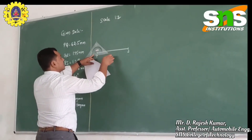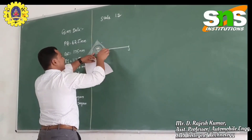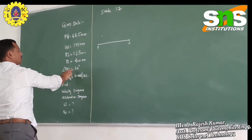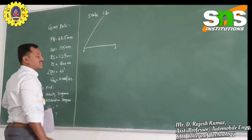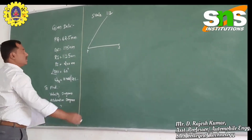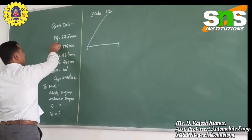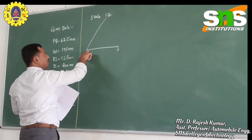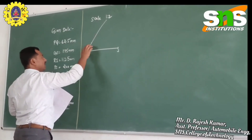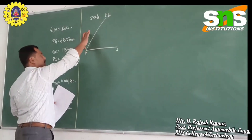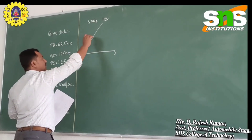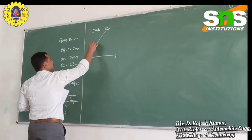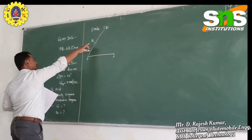Now I am taking 60 degrees and drawing a line at 60 degrees, because angle QPS equals 60 degrees. What is the length of link PQ? It is 62.5 mm; scaled, it is 31.25 mm, which is 3.12 cm. So I am drawing a line of 3.12 cm along that 60-degree direction, and this point is called Q. So I have located Q.